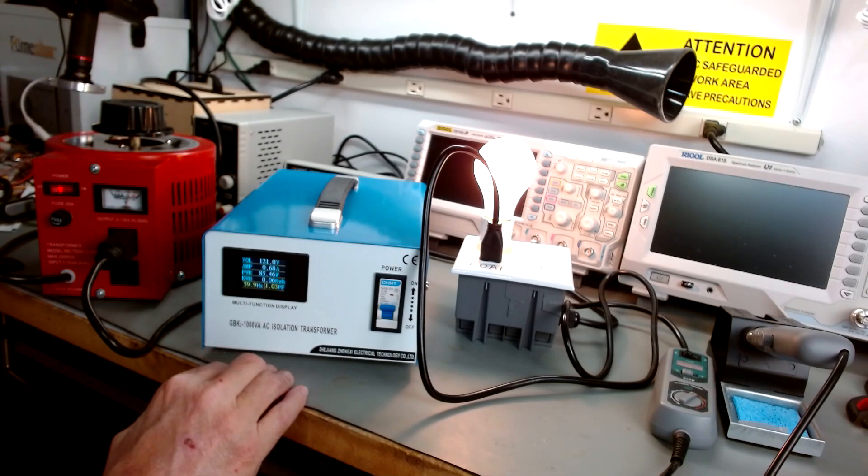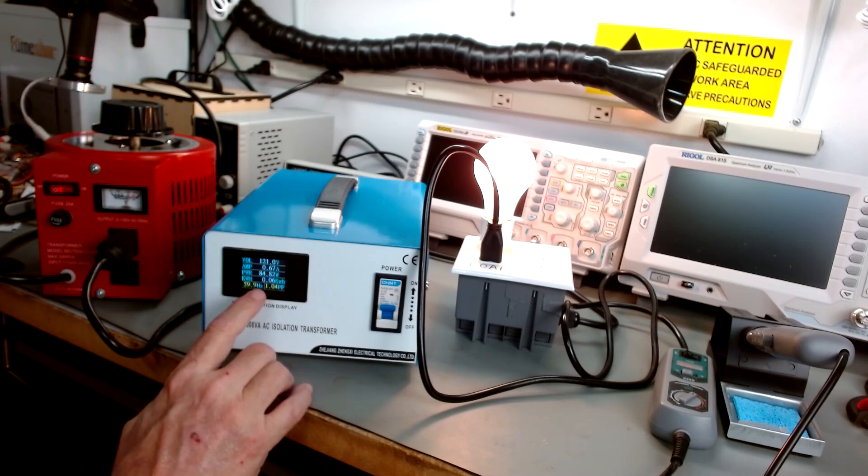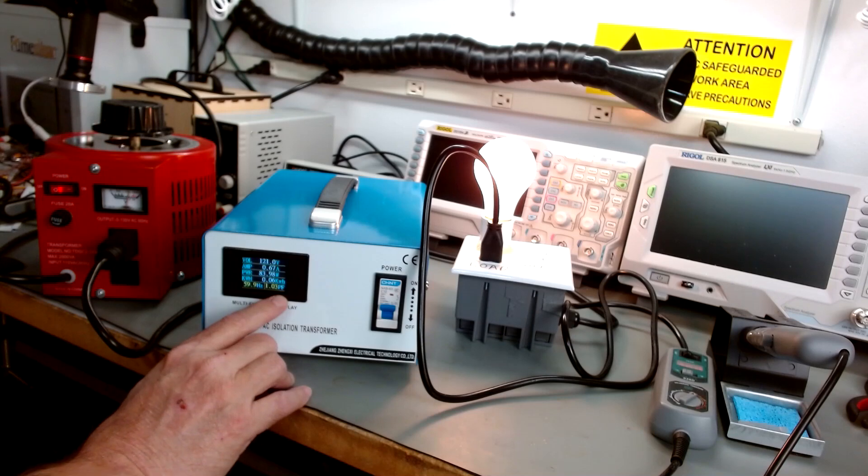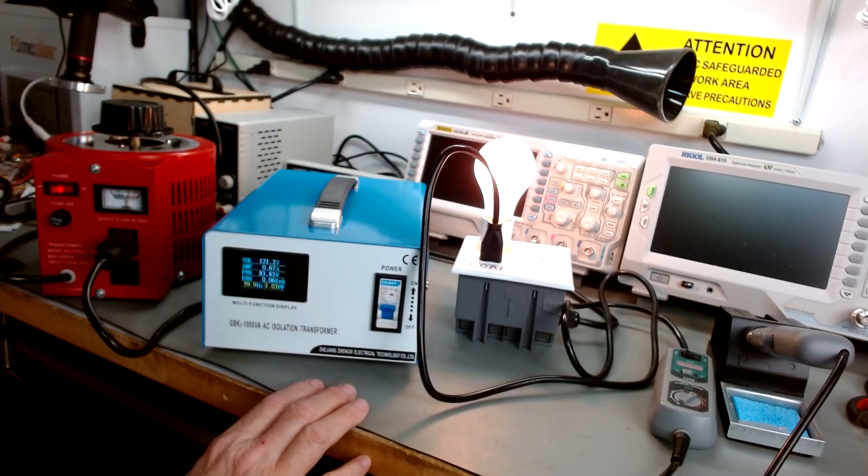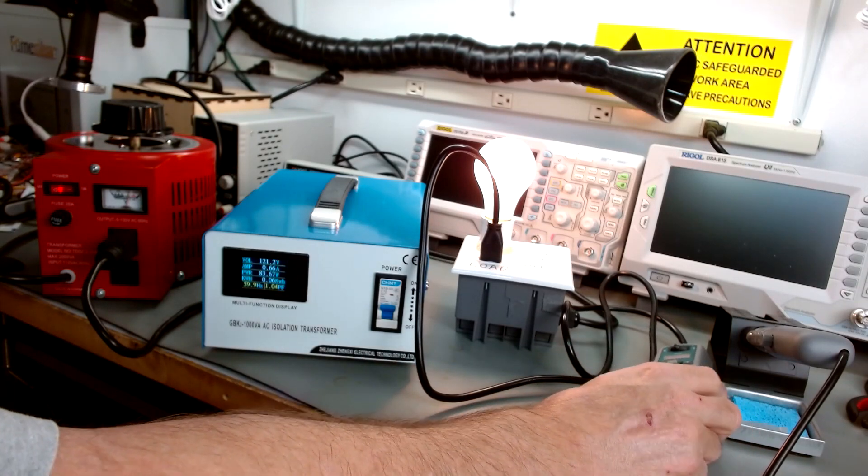Okay, 120 volts, 121. We're pulling 0.68 amps, 85 watts, 0.06 kilowatt hours, which that'll clock up over time. 59.9 still, 1.03 power factor. So the dim bulb tells me I'm pulling quite a bit of current.